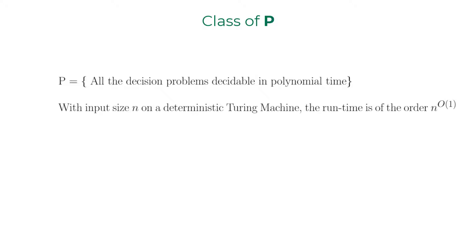Let's start with the class of P. The class of P consists of decision problems that are solvable in polynomial time on a deterministic Turing machine. If n is the size of the input, the time complexity is n to the power o of 1, which is basically a constant.